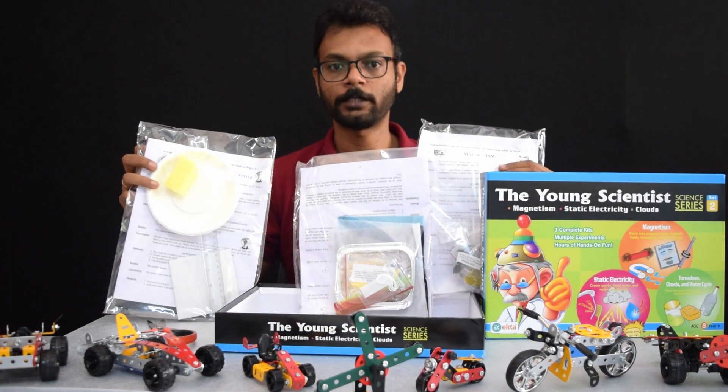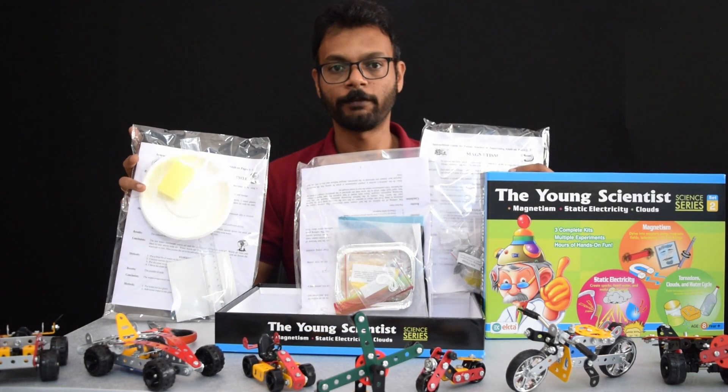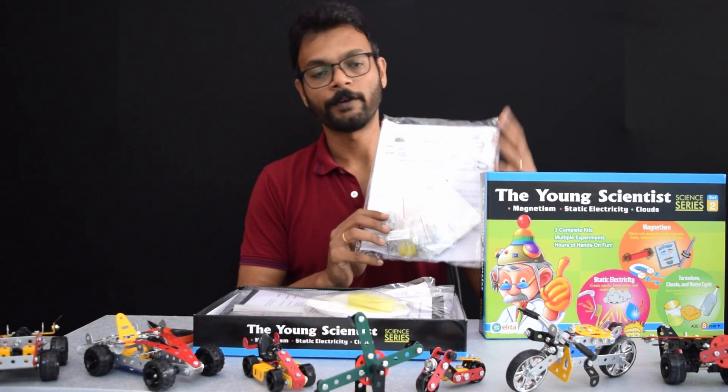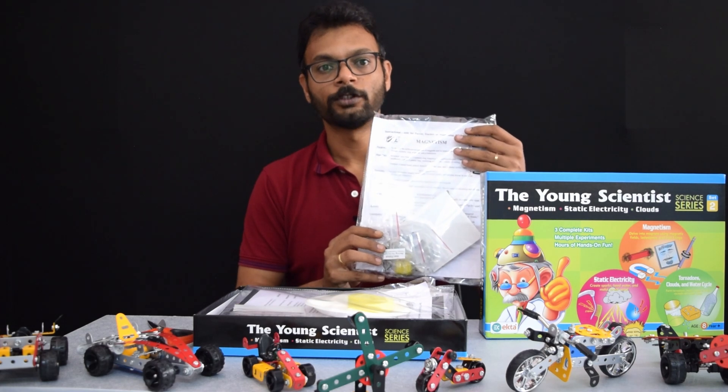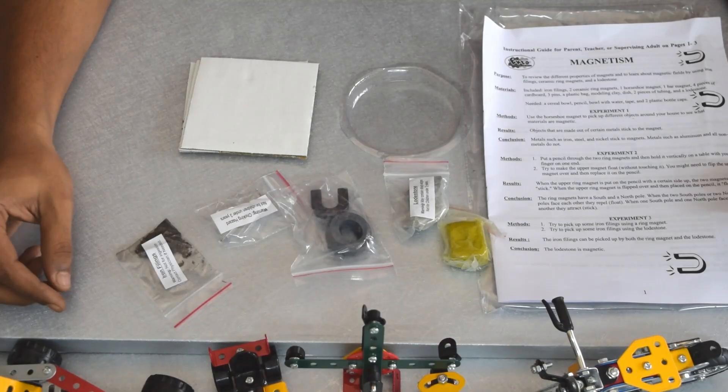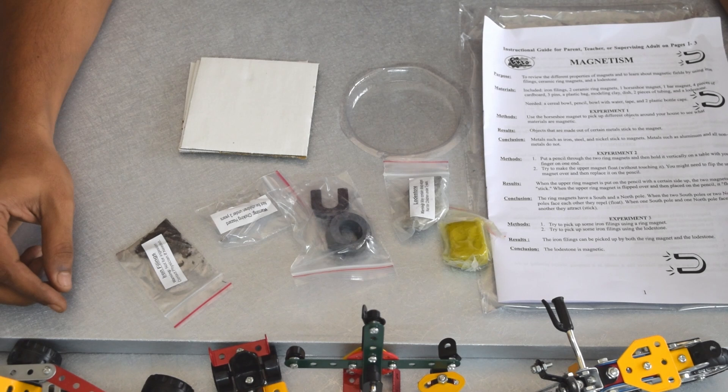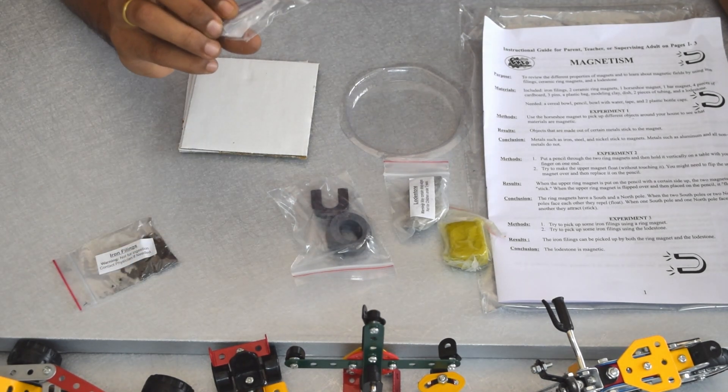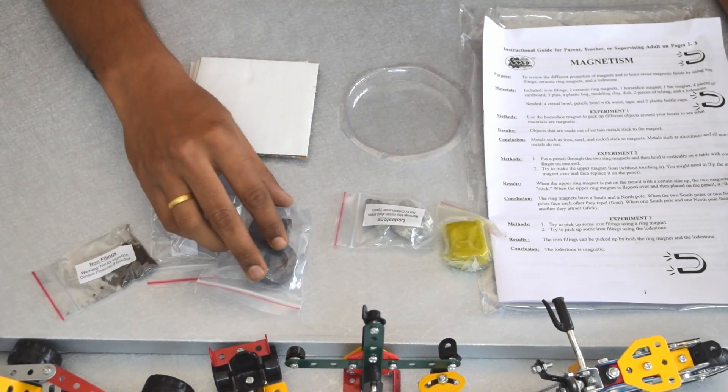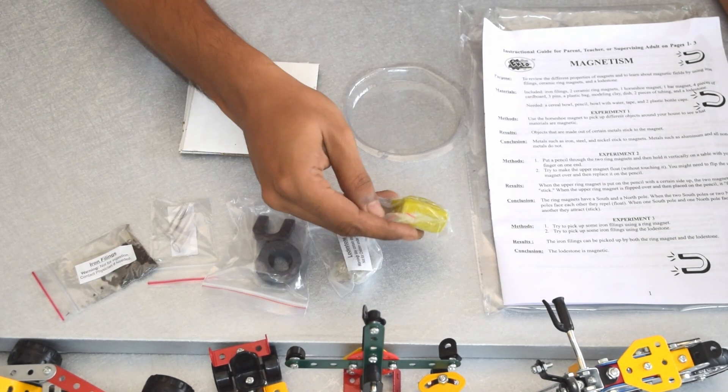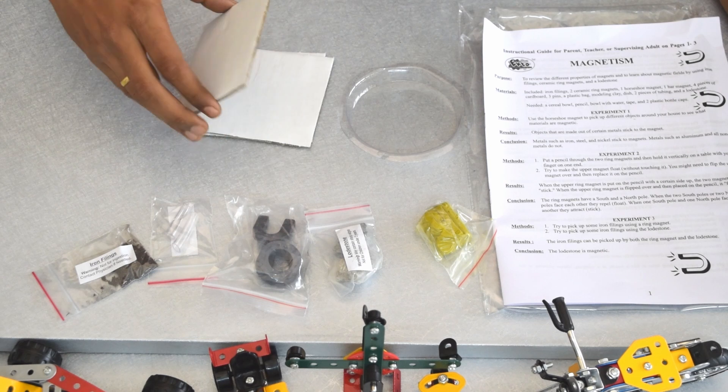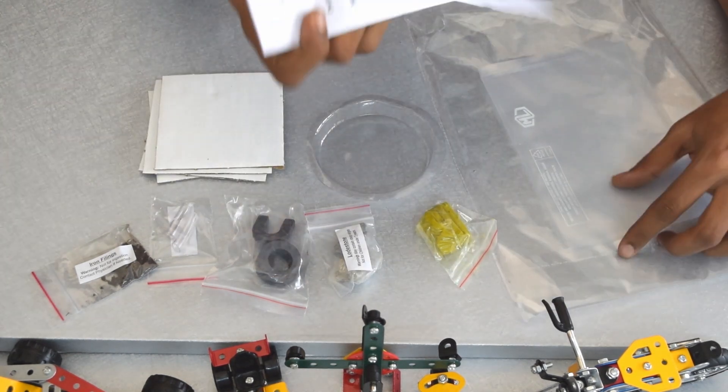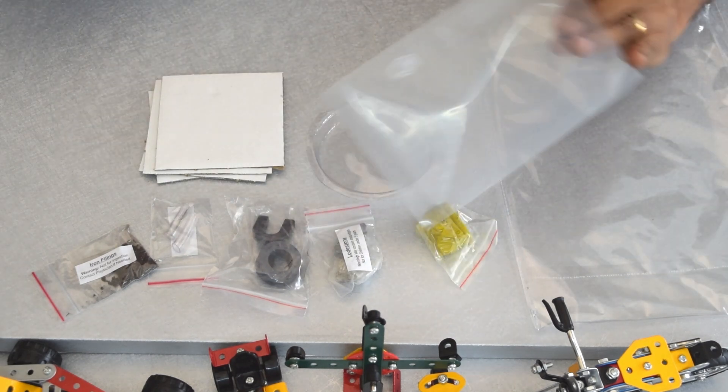There are three substrate kits including manuals for everything. This will be part one of the Eng Scientist kit where we will learn about magnetism. I have opened up the magnetism kit. We have some iron filings, plastic tubes with pins, magnets, lodestone, clay, four pieces of cardboard, a plastic cup, the instruction manual, and a plastic bag as well.